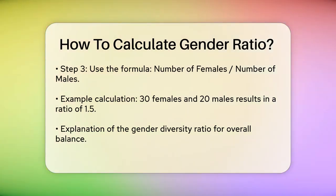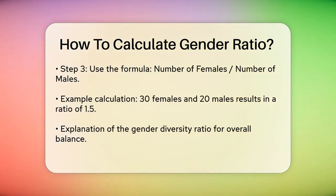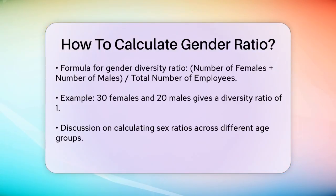Another way to look at it is to calculate the gender diversity ratio, which gives you an idea of the balance between genders in the group. Here, you add the number of females and males, then divide by the total number of employees. Using the same example: number of females (F) = 30, number of males (M) = 20, total number of employees (T) = 50. The formula for the gender diversity ratio is r = (F + M) / T = (30 + 20) / 50 = 1.